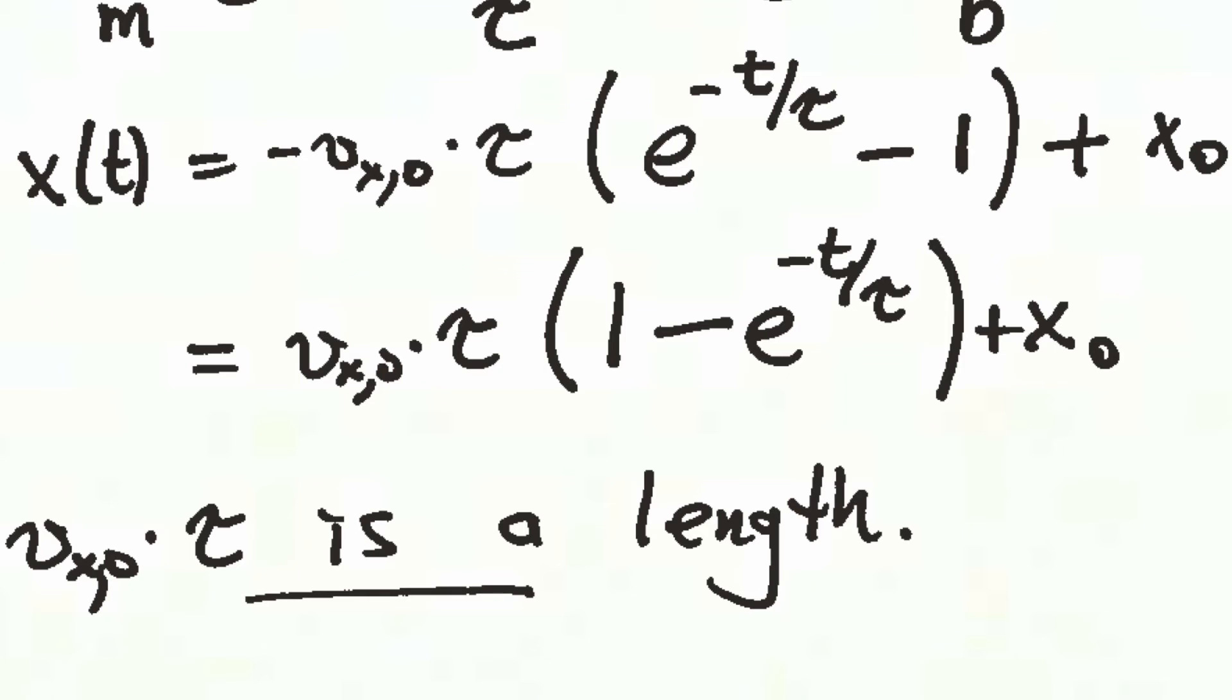We can incorporate the negative sign at the very beginning of the right-hand side into the parentheses, and so rewrite to get that second line. Now it turns out, of course, that bx0 times tau, that's a length. That has units of length. Velocity times a time, that'll be a length. So we get a length times a strange argument in parentheses plus the initial value.